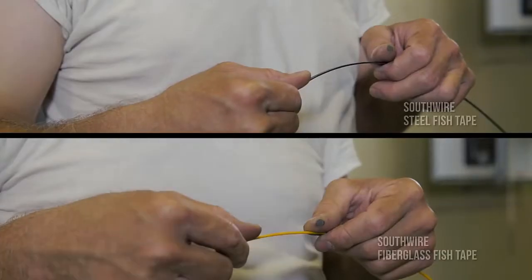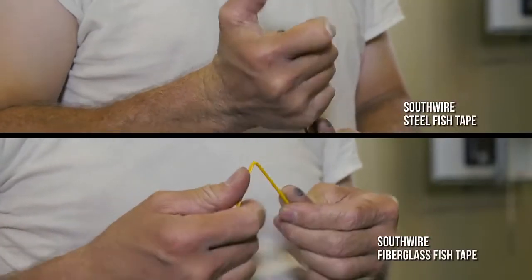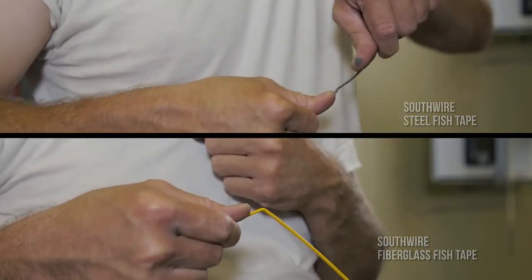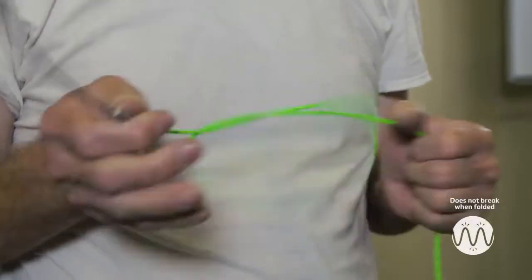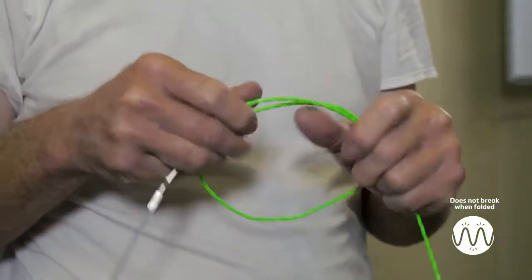The Simple Fish Tapes are kink and break resistant, combining the strength of a steel fish tape with greater flexibility than fiberglass fish tapes. The non-conductive material is also rust resistant and will not deform when bent like other fish tape materials.